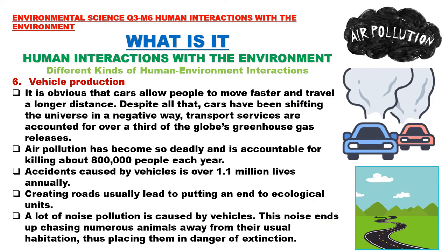Number 6: Vehicle Production. Cars allow people to move faster and travel longer distances. Despite that, cars have been shifting the universe in a negative way. Transport services account for over a third of the globe's greenhouse gas releases. Air pollution is accountable for killing about 800,000 people each year. Accidents caused by vehicles claim over 1.1 million lives annually. Creating roads usually leads to putting an end to ecological units. A lot of noise pollution is caused by vehicles, chasing numerous animals away from their usual habitation, placing them in danger of extinction.